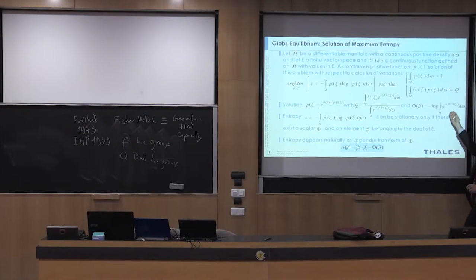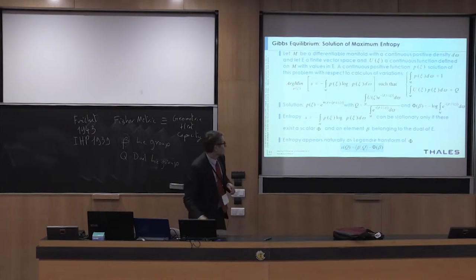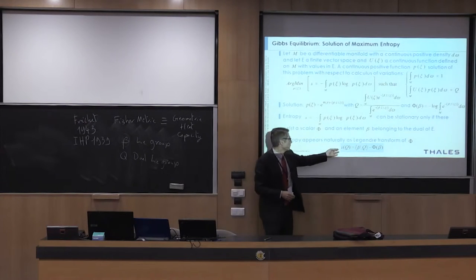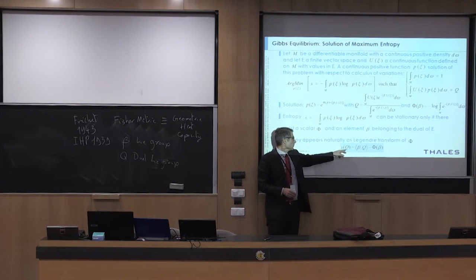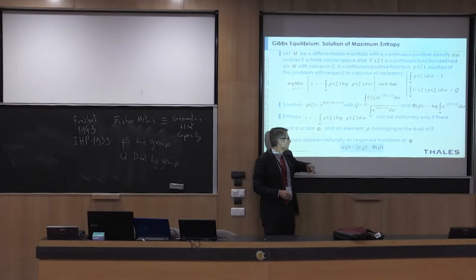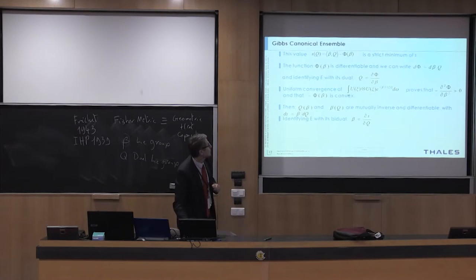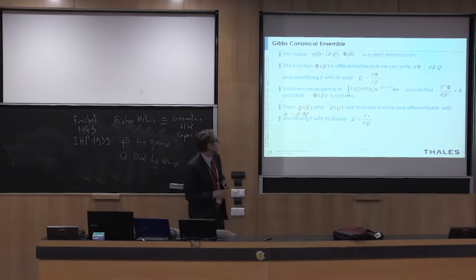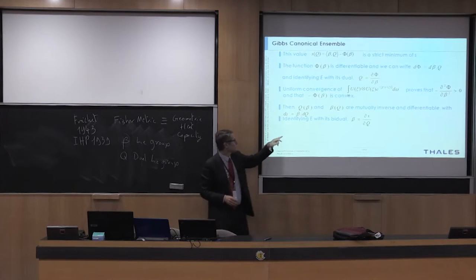Here you have the classical Gibbs equilibrium, and phi which will be the minus log of the characteristic function. You have the relation that the entropy, which is dependent on the variable q, is the Legendre transform of the log of the characteristic function. And dS is just d-phi over d-beta times d-q over d-beta.